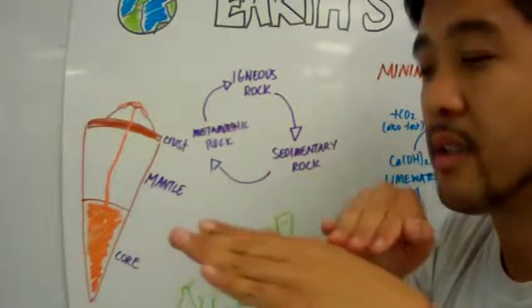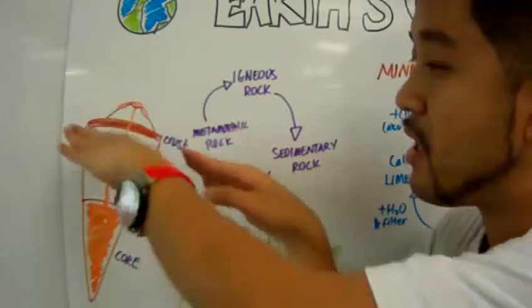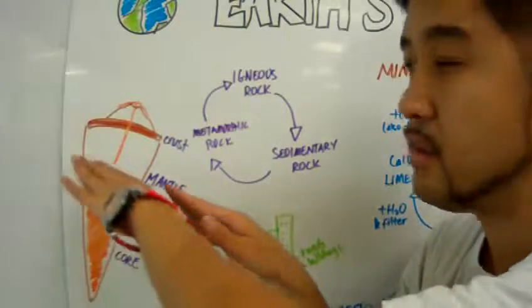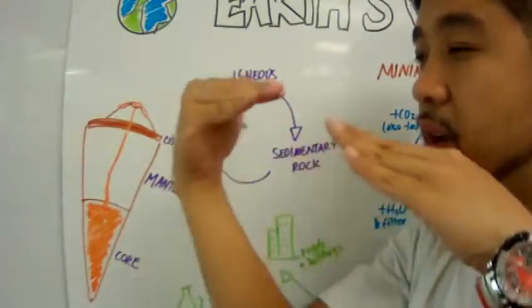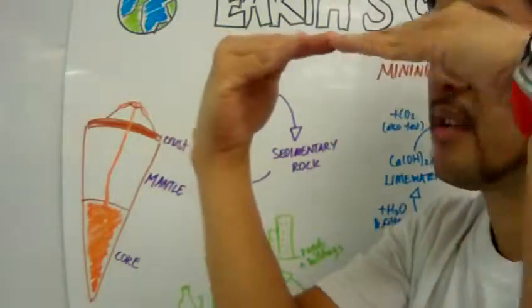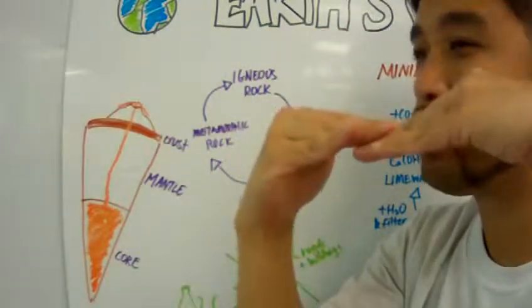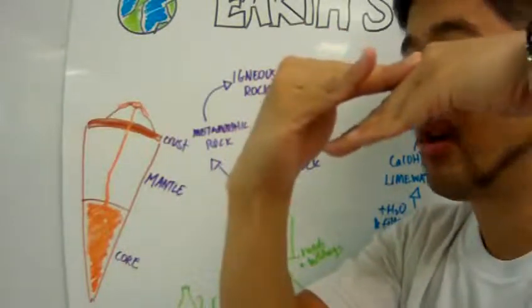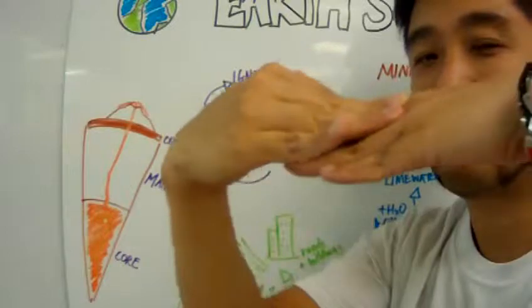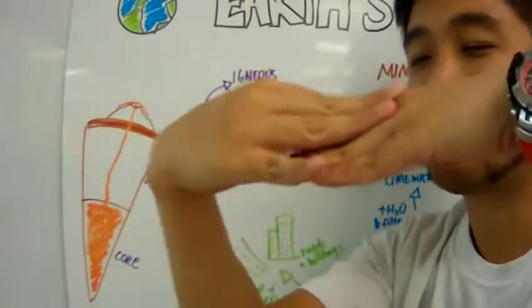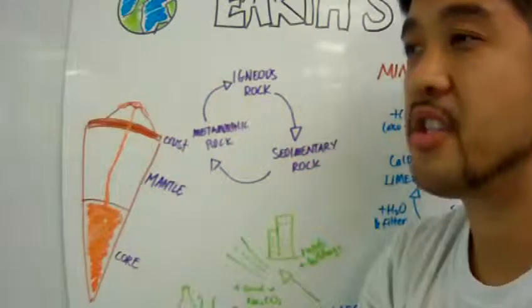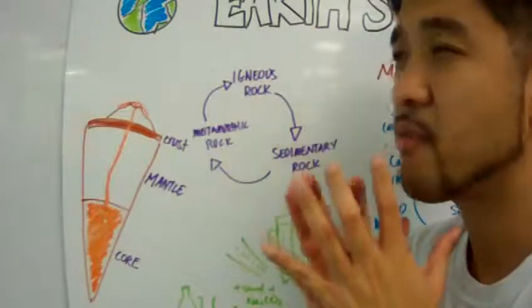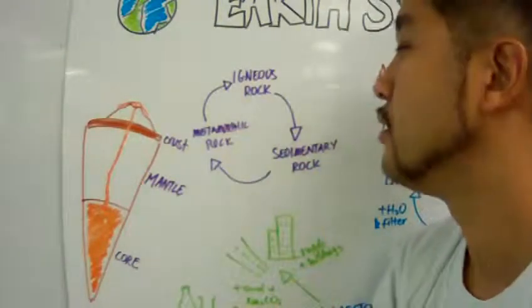When the tectonic plates move, tectonic plates are these plates that lie on top of the core and mantle. When the tectonic plates move, sometimes sedimentary rock gets re-formed into metamorphic rock because the sedimentary rock goes into or under another tectonic plate, and the sedimentary rock under sheer volume or sheer pressure and heat will turn into metamorphic rock.